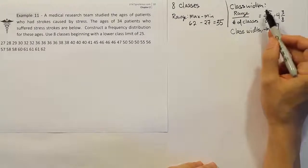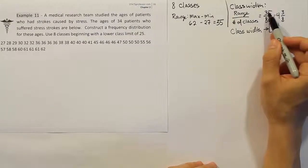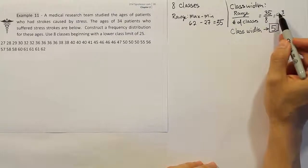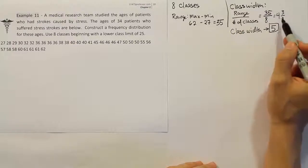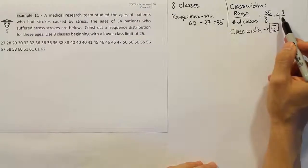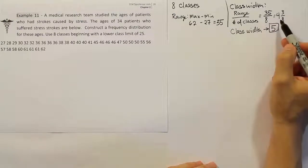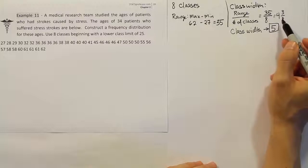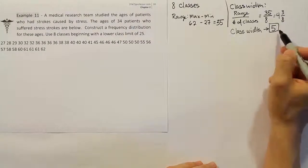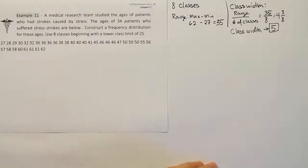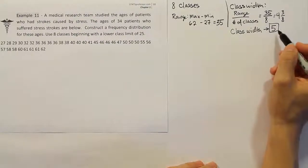Even if the calculation gives a whole number, you usually still want to round up to five or some number higher, because the number directly from the calculation is often too small to make the table work. Generally, going to a convenient nearby whole number works best, especially in a problem like this with no decimals. So we're rounding the class width up to five and moving on to creating the table.